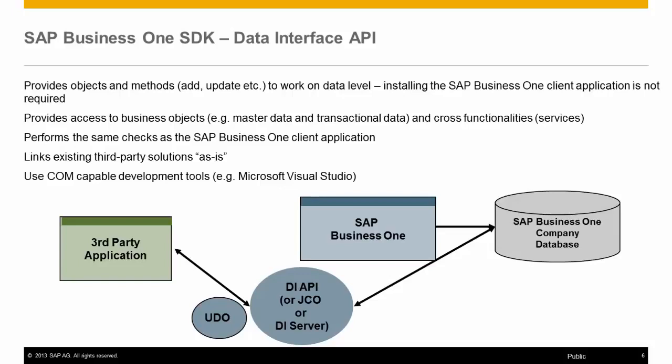The DI API can be used to programmatically integrate external business systems. Available business objects consist of master data and transactional data types and allow for add, update, and delete. The same business logic used for data validation by SAP Business One is utilized by the DI API.